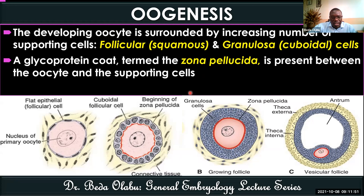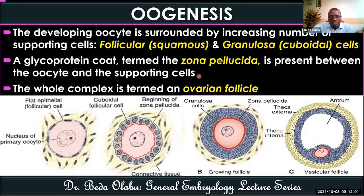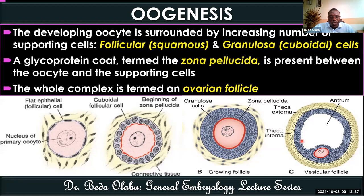Importantly, the oocyte is surrounded by a glycoprotein covering separated from the supporting cells. That glycoprotein covering — secreted by both the oocyte and the supporting cells — is called the zona pellucida. The zona pellucida is an important structure, as we'll see when we talk about fertilization. The complex made up of the oocyte, the supporting cells, and the zona pellucida is what we call the ovarian follicle, seen at different stages of maturation.